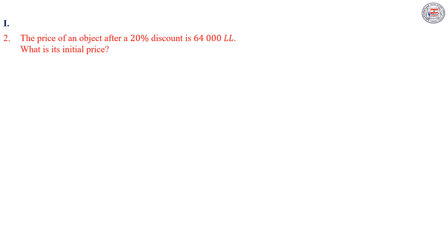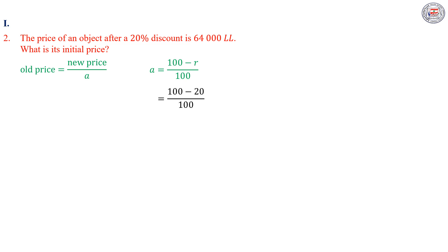In Part 2, the price of an object after a 20% discount is £64,000. What is its initial price? The initial price is the old price, which is equal to the new price over A. Since we have a discount, that means we have a decrease in price, so A is equal to (100 minus 20) over 100, giving A equal to 0.8. Then the older price is equal to £64,000 over 0.8, therefore the older price is £80,000.